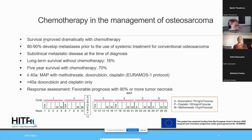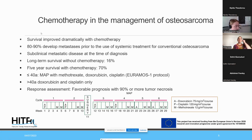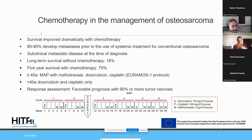Before chemotherapy, 80 to 90% of patients treated with surgery only would develop metastasis, even if staged without metastasis at initial diagnosis — suggesting subclinical disease not visible on MRI or CT at first diagnosis. The historic long-term survival was 16%, and with the introduction of chemotherapy it increased to approximately 70%.